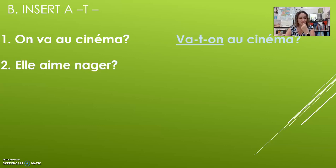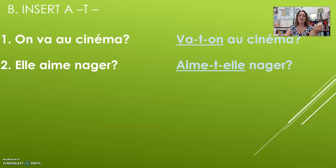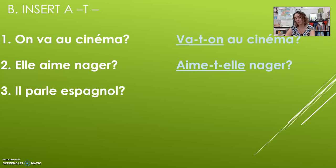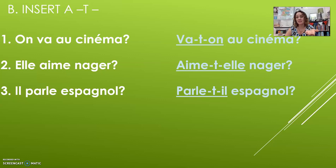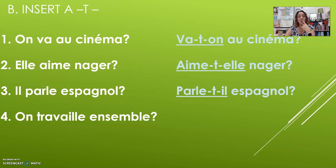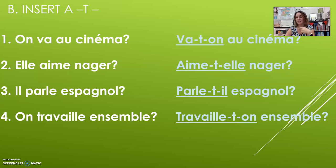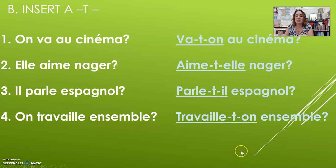It looks weird — you get used to it. For example «Elle nage?» — try this one, pause and try it. If you flip it you get «Nage-elle», but we don't want that; we want «Nage-t-elle». «Il parle espagnol?» — does he speak Spanish? Becomes «Parle-t-il espagnol?» «On travaille ensemble?» — are we working together? Becomes «Travaille-t-on ensemble?» We insert little T's whenever you have two vowels beside each other — this is only with inversion questions, not everywhere.